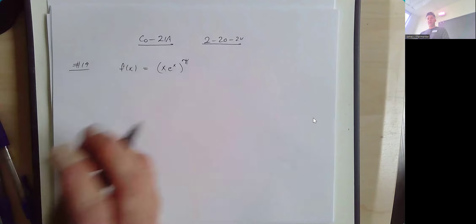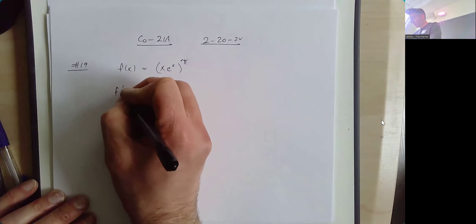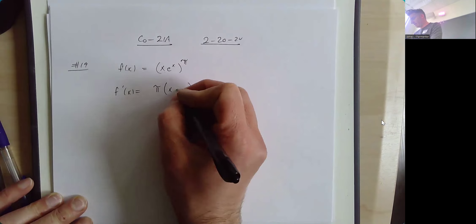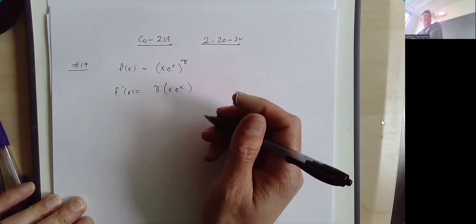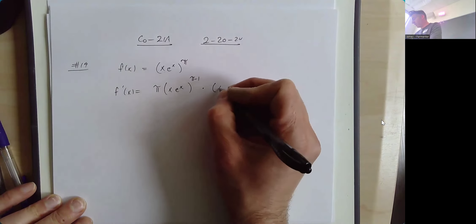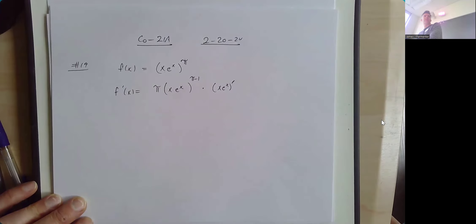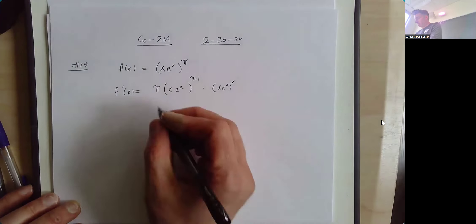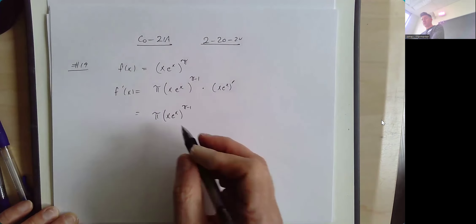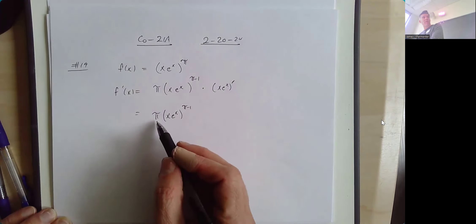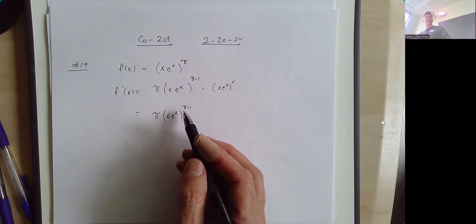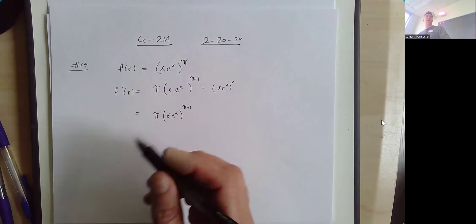Here it's going to look a little messier, but the idea is the same. The power comes down, your stuff stays as is, and the new power is one less than before, so we write pi minus one. Then we multiply by the derivative of the inside. So we rewrite this as pi times x e to the x to the pi minus one. Important point: we shouldn't be writing any decimal approximations. This isn't 3.14, this isn't 2.14 — the exactly right thing to write is pi and pi minus one.